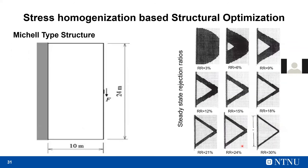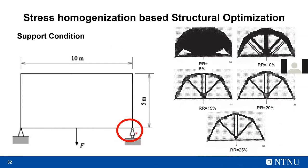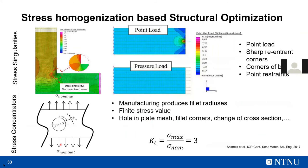The computer code arrives at the same structure we would draw on paper — an optimal truss-like form with a set rejection ratio. Changing the support conditions gives a different optimum, also one we would have intuitively designed. A bridge example looks very much like what you would expect a bridge to look like. The problem is that our computer can't do this very efficiently. As mechanical engineers, you're probably familiar with stress singularities.